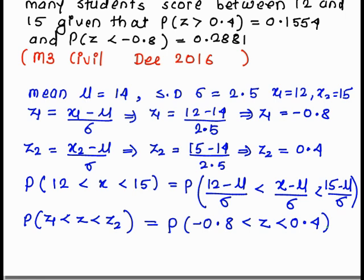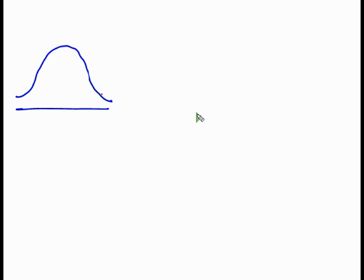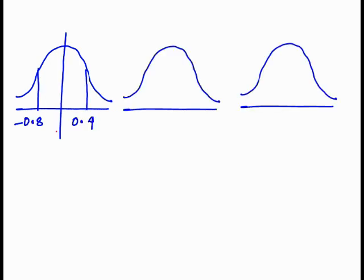Now understand how to calculate this probability by diagram. This is a normal curve. The area below the normal curve is total 1. Here we require the area between minus 0.8 and 0.4.